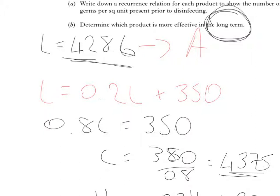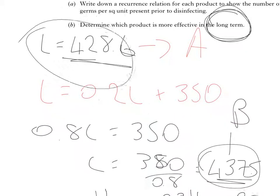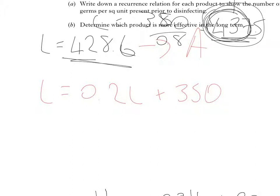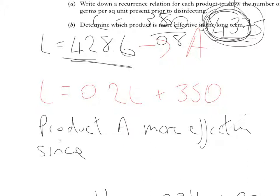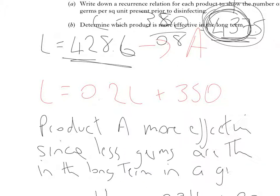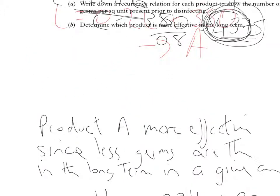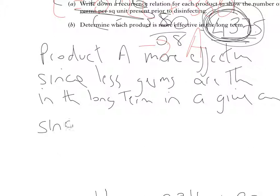The context of the question is how many germs per square unit are still remaining in the long term. So, in the long term, for product A, it's 428.6. For product B, it's 437.5. So, in the context of the question, the more effective product is product A. So, we would just say product A is more effective since less germs are there in the long term in a given area. And make a numerical comparison since 428.6 is less than 437.5.